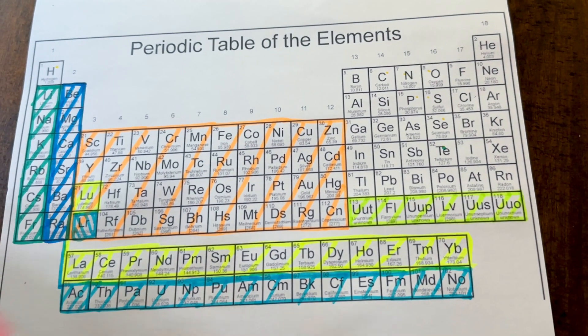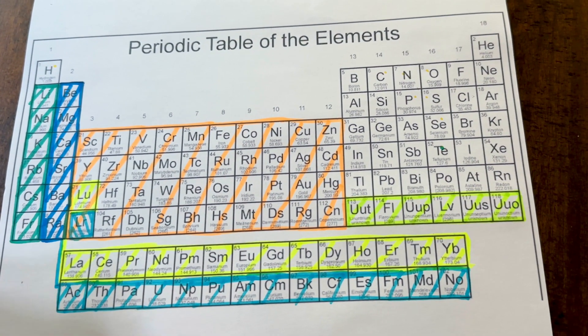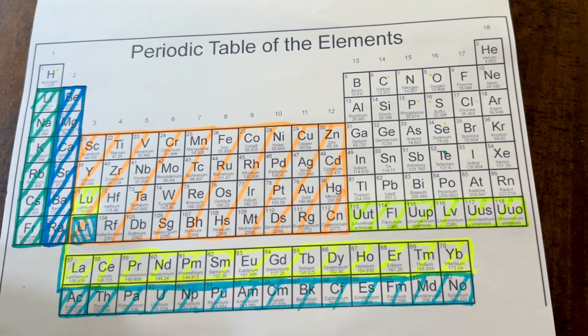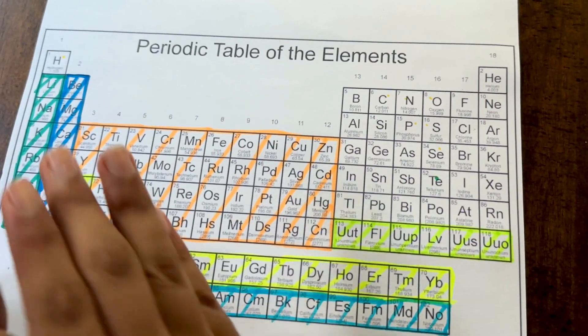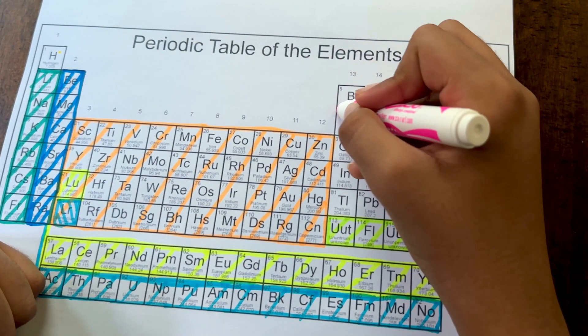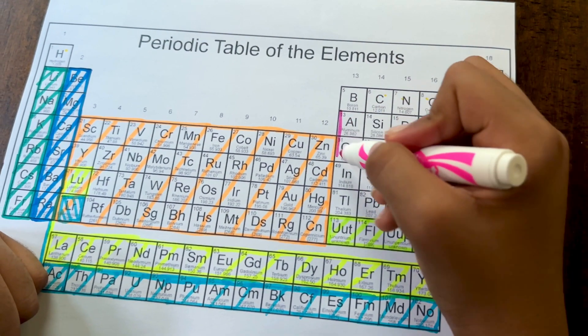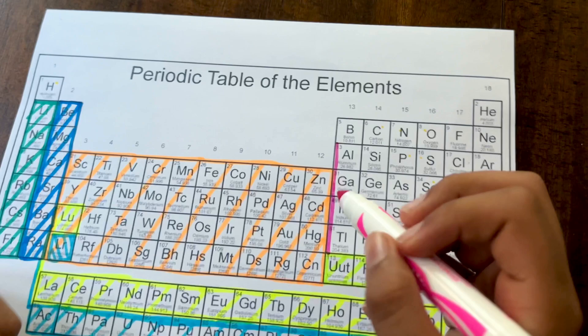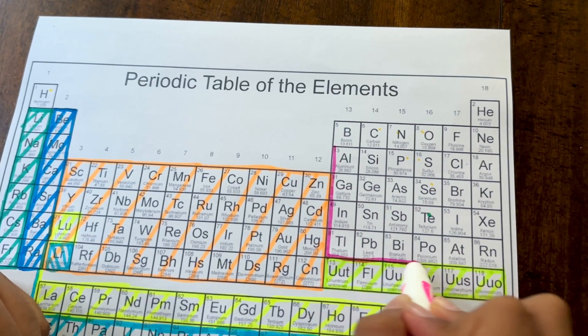Next, we're going to be moving to post-transition metals. These are the next step from moving from metals to metalloids or metals to non-metals. This includes aluminum all the way to thallium and then over here to bismuth.